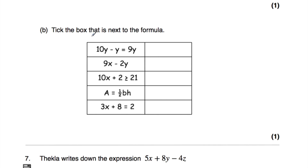Part b says: tick the box next to the formula. 10y take away y is always equal to 9y — that's an identity. 9x take away 2y is an expression. 10x plus 2 is greater than or equal to 21 is an inequality. The area A equals half the base times the height — that's the formula for the area of a triangle, linking the variables base, height, and area. So that's our formula and I've ticked that. Finally there's also an equation present, but we were asked to tick the formula.